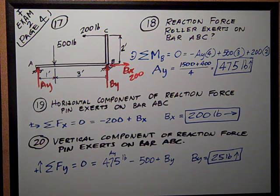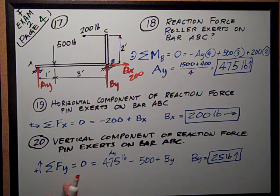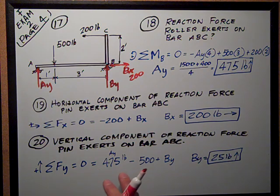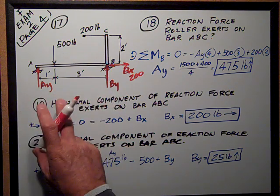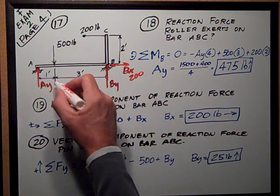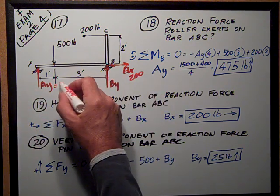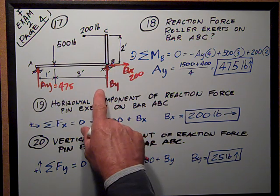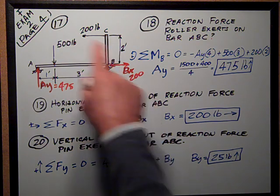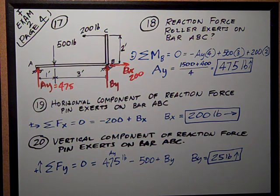Question number 20, the vertical component of the reaction force the pin exerts on bar ABC. Here I've got one more equation left, my sum of forces in the Y direction, and that's equal to zero. I assume positive is up. So I've got my, working from the left to the right, I've got my AY, which is 475 pounds, positive up, minus my 500 pounds applied force, plus the BY reaction, and that's all the external and reaction forces I've got.